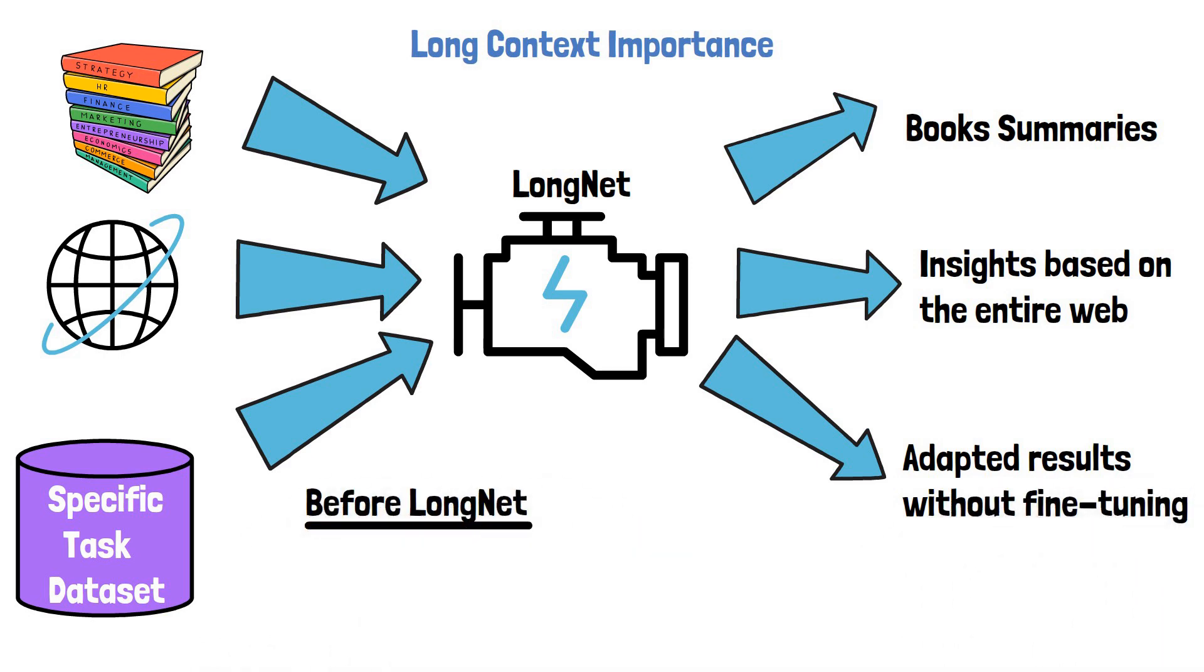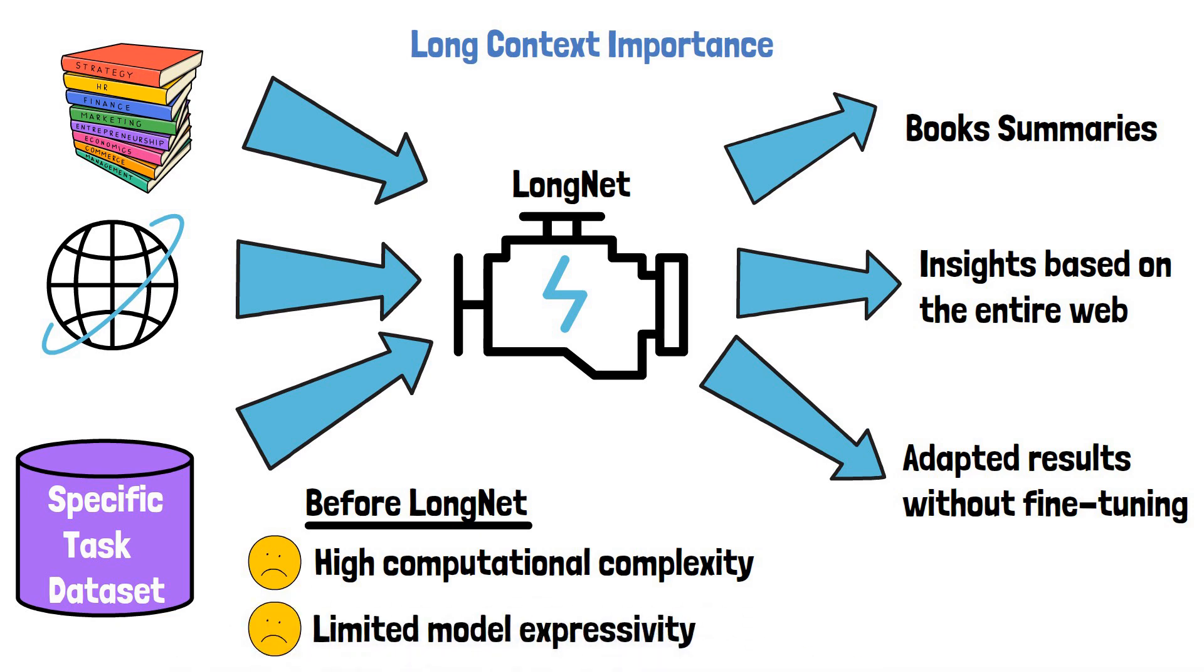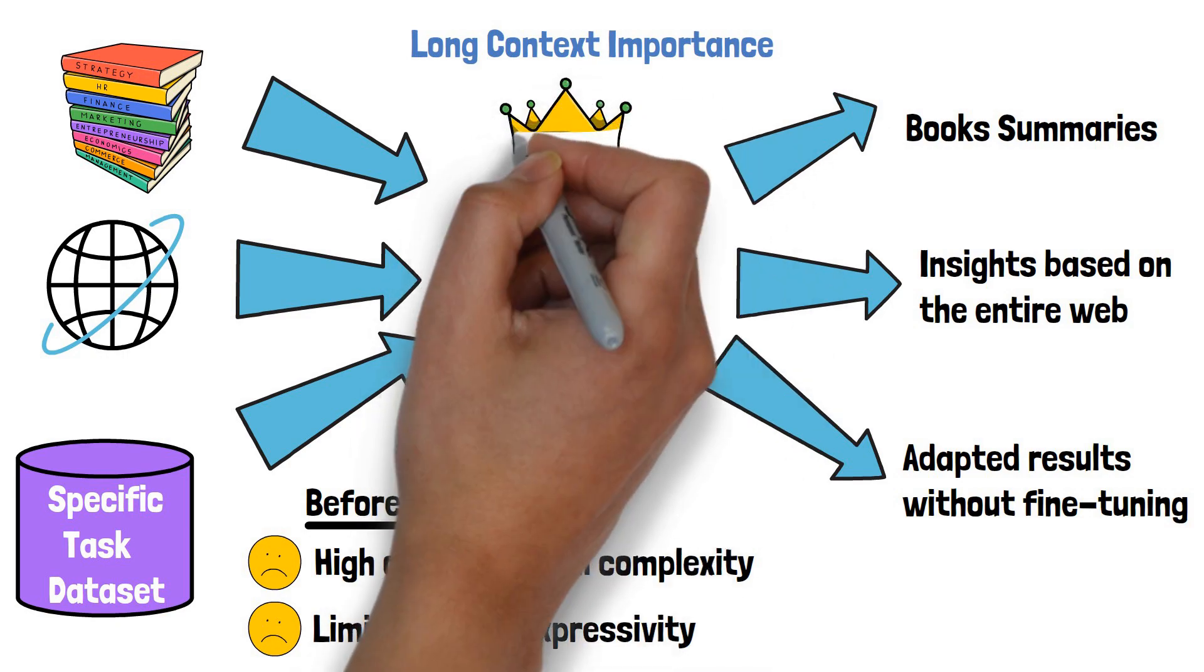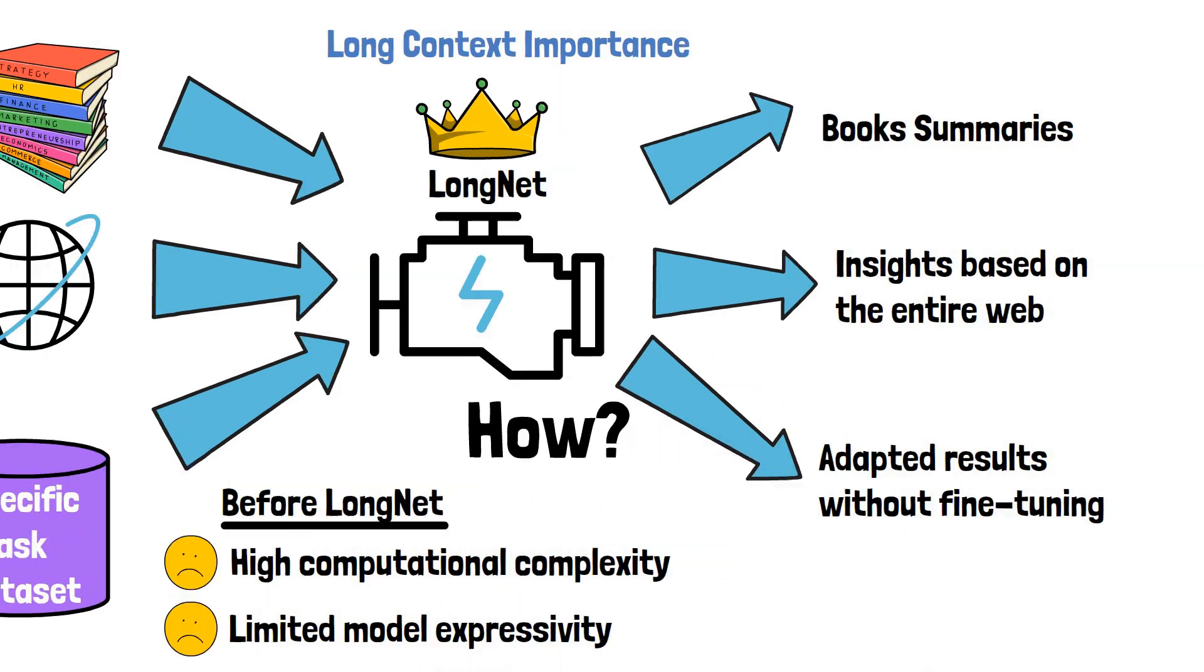Until LongNet, existing methods struggled with long sequences. They either have high computational complexity or limited model expressivity, which made it difficult to scale up the context lengths. As mentioned earlier, LongNet can scale sequence lengths to 1 billion tokens and is doing so without sacrificing the performance on shorter sequences. Let's move on to talk about the key component that allows that, and this component is called dilated attention.